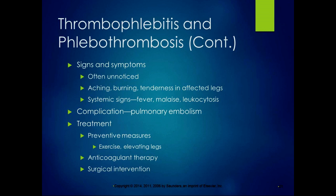Aching, burning, and tenderness in the affected legs can happen. The major complication with thrombophlebitis is pulmonary embolism — if a thrombus breaks off, it becomes an embolism, which is a traveling clot, and it can travel up to your lungs and block something off. Treatment includes preventative measures: exercise to prevent blood stasis, elevating your legs, anticoagulation therapy if indicated, and sometimes surgical intervention such as implanting a mesh in the vein to keep a clot from traveling.